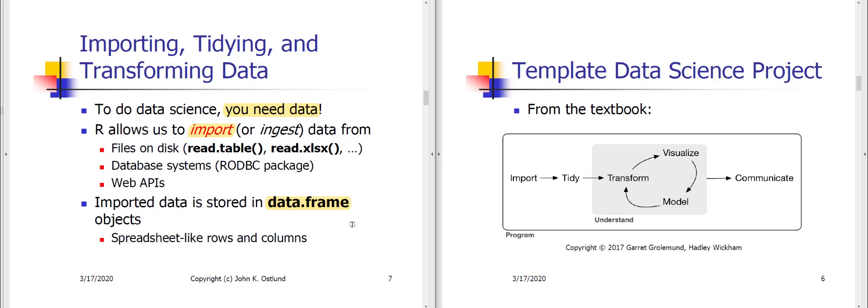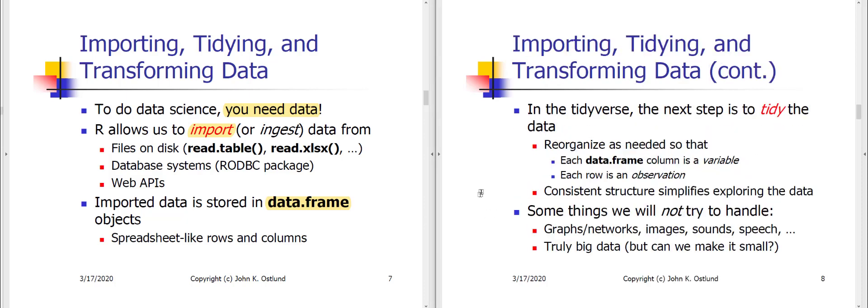Loosely speaking, a data frame is sort of like a spreadsheet-ish data structure that has rows and columns that are labeled. Now, once you have done your importation, the next step, if we're following the tidyverse methodology, is to tidy the data. And basically what that means is to structure all of your data frames in such a way that each column of the data frame represents some kind of random variable of interest, and each row in the data frame is a particular observation.